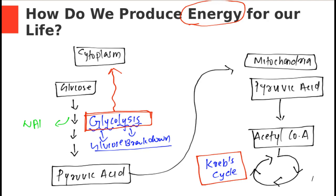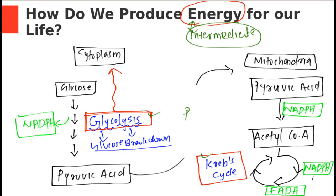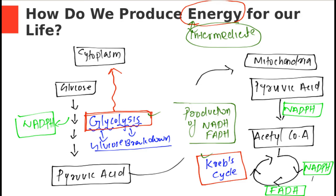After glycolysis, a sub-molecule is produced known as NADH. The same NADH is produced when pyruvic acid is converted into acetyl coenzyme A, and also in the Krebs cycle. In the Krebs cycle, one additional molecule FADH is also produced. NADH and FADH are the intermediates — energy intermediates of the cell — produced in Krebs cycle and glycolysis. The function of glycolysis and Krebs cycle is the production of NADH and FADH, the energy intermediates.